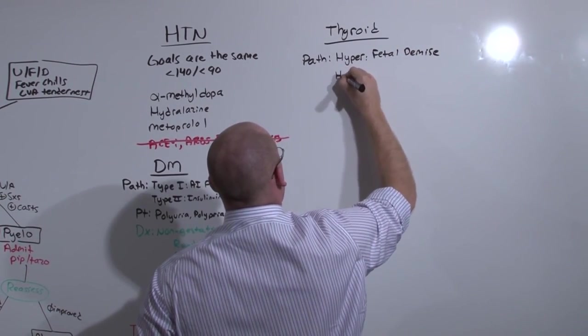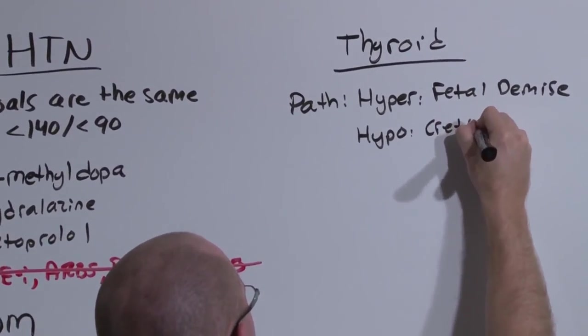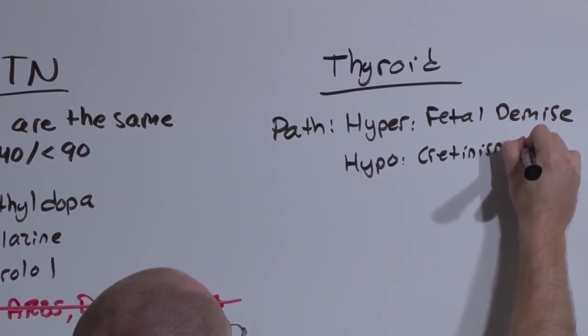But if you're hypothyroid, baby will come to term, but it'll have cretinism, severe mental retardation.